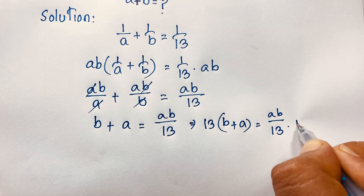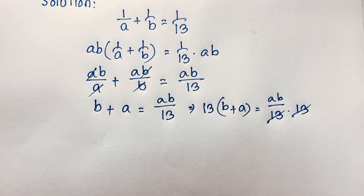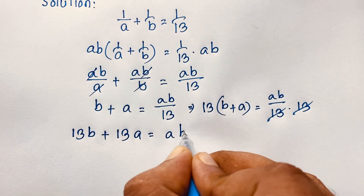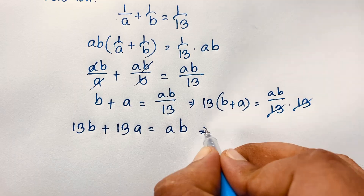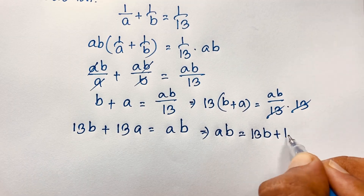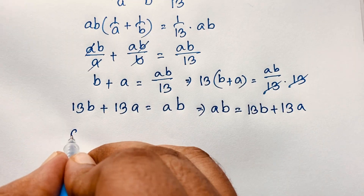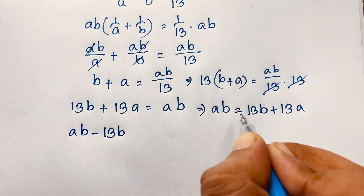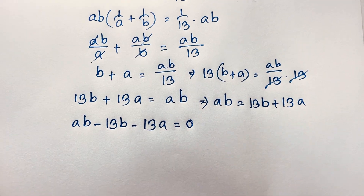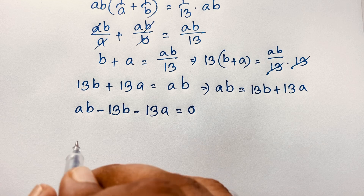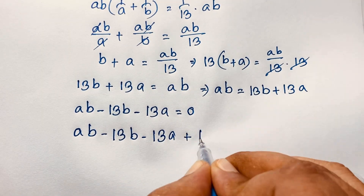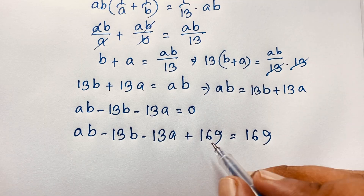After multiplying both sides by 13, the 13s cancel on the right and we get 13b plus 13a equals ab. Now moving terms, we have ab minus 13b minus 13a equals 0. Then I add 169 to both sides, giving ab minus 13b minus 13a plus 169 equals 169.